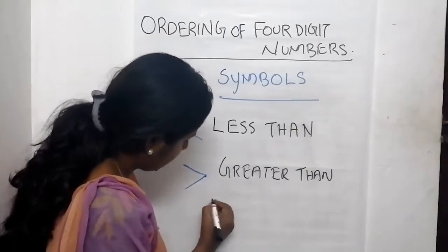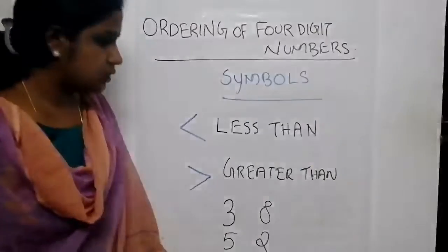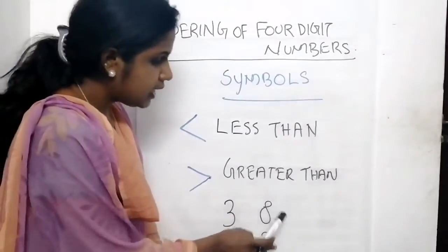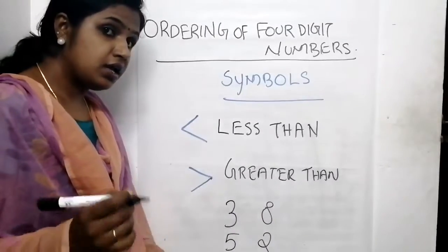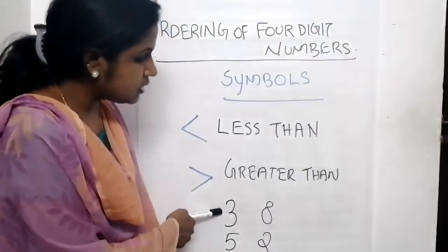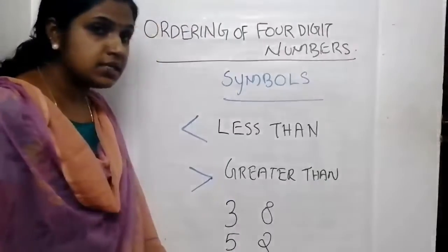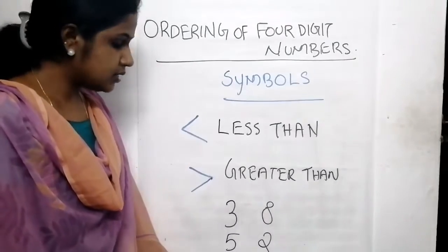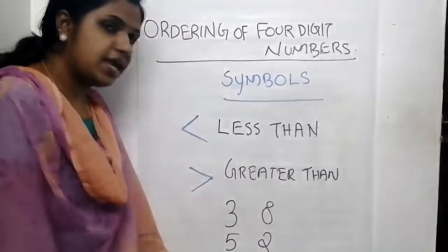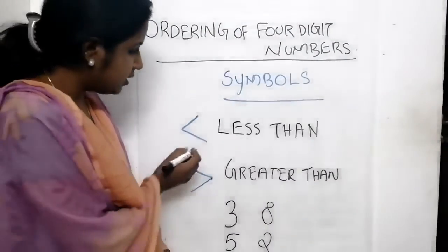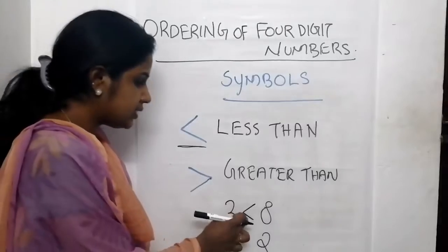Let's take an example. Here you can see four numbers. Take these two pairs - the numbers are 3 and 8. Which number is smaller and which number is greater? This 3 is less than this 8. 3 is the smaller number and 8 is the greater number. So we write: 3 is less than 8, using the less than symbol.